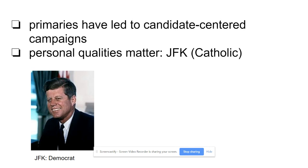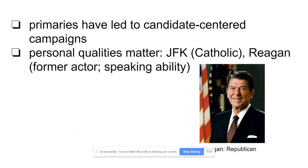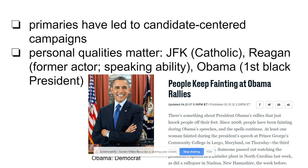Examples of personal qualities that have mattered: JFK was Catholic — the first Catholic president — and many Republicans who were Catholic voted for him because it was an exciting moment for America to vote for someone who wasn't Protestant. Reagan had name recognition as a former actor who became governor of California, and had great speaking ability — he was very funny, made fun of himself, was jovial, and used that to win election. President Obama in 2008 generated tremendous excitement as people were eager to vote for the first Black president, with the idea that it might help put racial tensions behind America, though that's arguable.